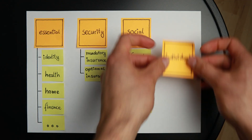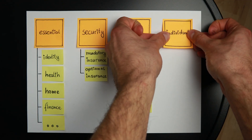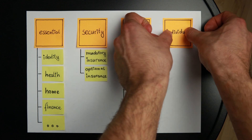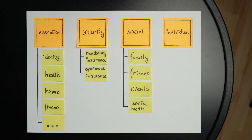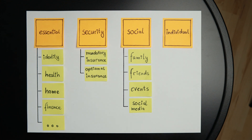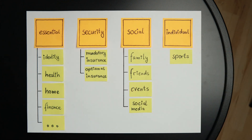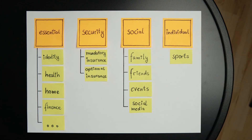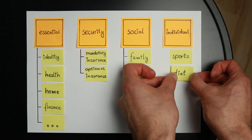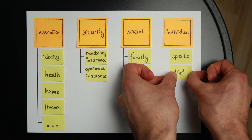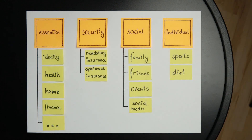The fourth layer is the individual layer. This folder contains everything you do to feel good about yourself or to feel valued by others. For me this boils down to sports and my diet, because if I don't keep an eye on these two I basically feel like a couch potato and I really cannot harness my true potential. So now that we've got the serious things out of the way, let's start with the fun stuff.